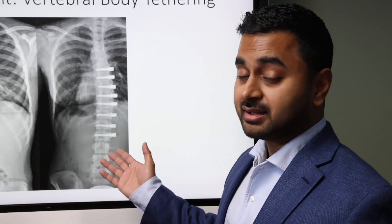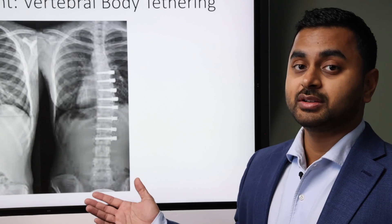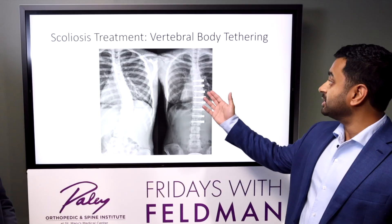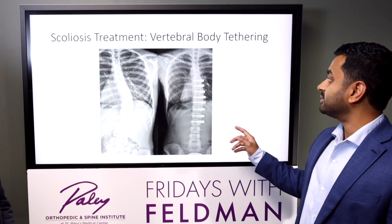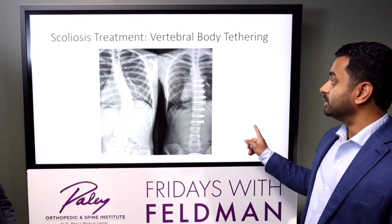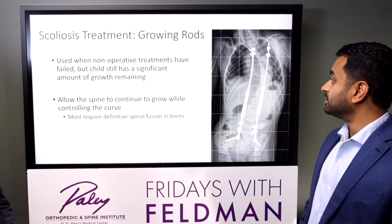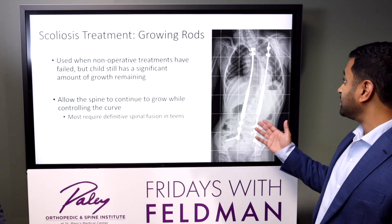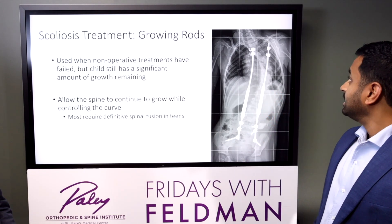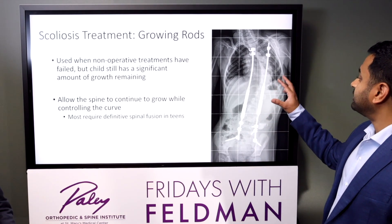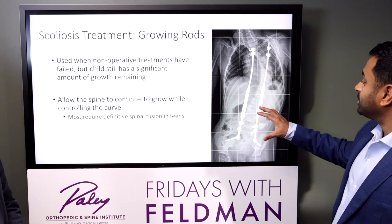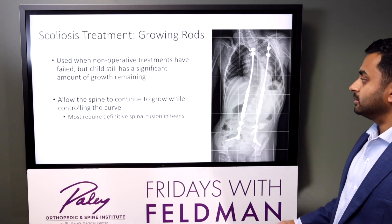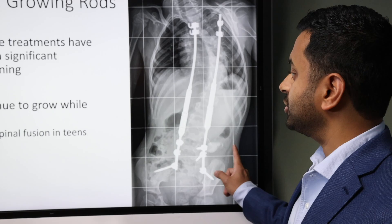This is the tethering, which is also a somewhat new technology — been around probably less than 10 years. This is what allows the patient to grow and have some flexibility, which we weren't able to do before. And then this is the growing rods for a patient with a specific syndrome. This is just a two-year-old, and it allows the spine to grow as they continue to mature.